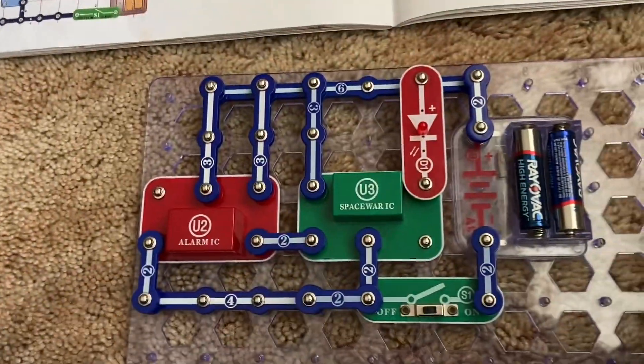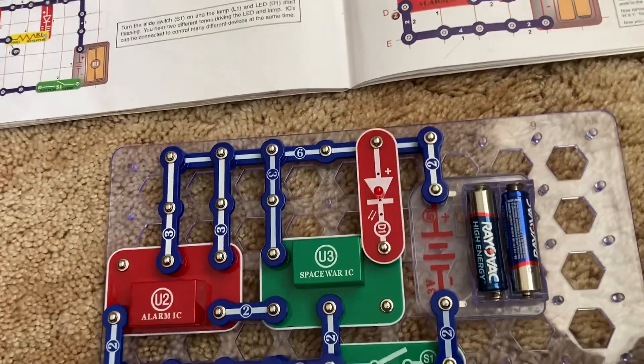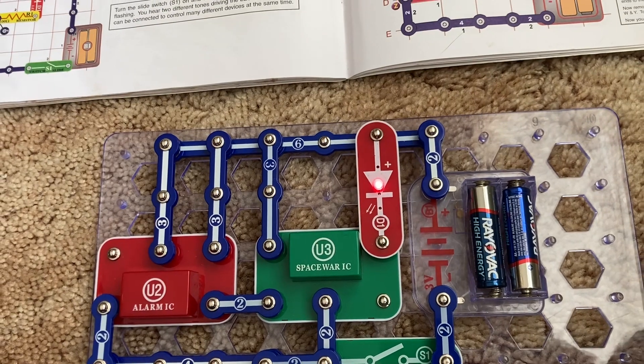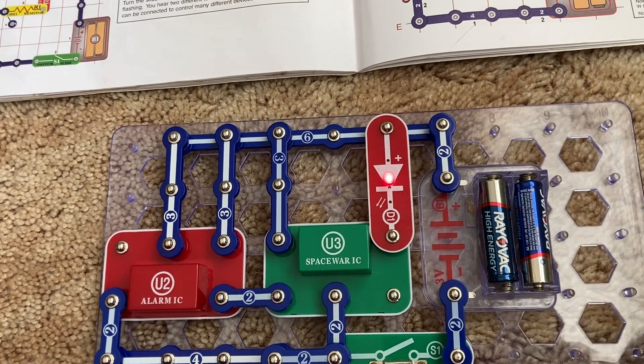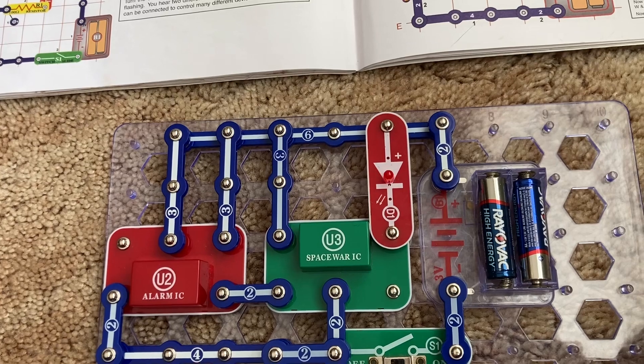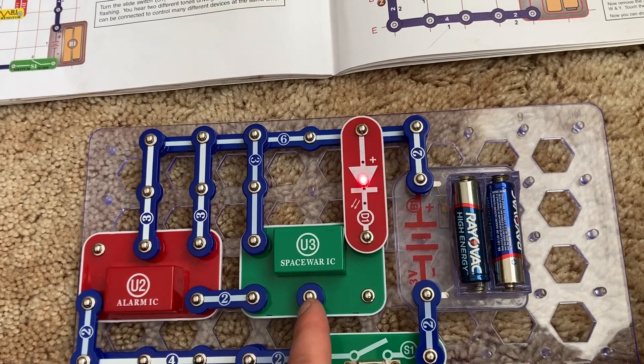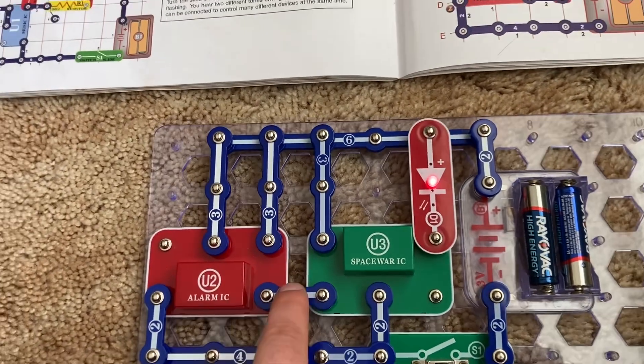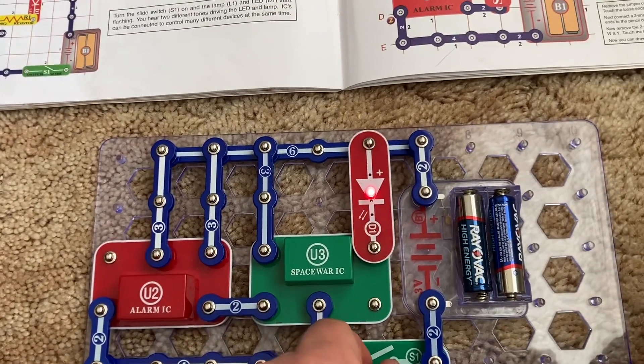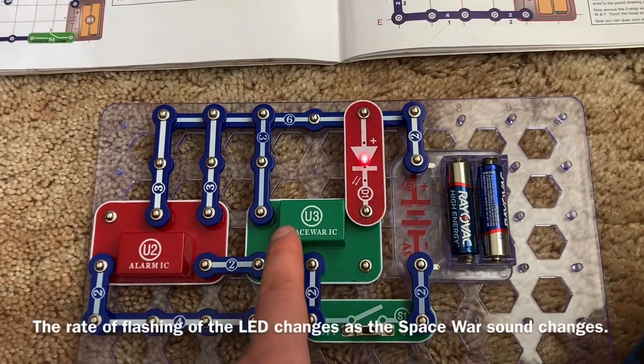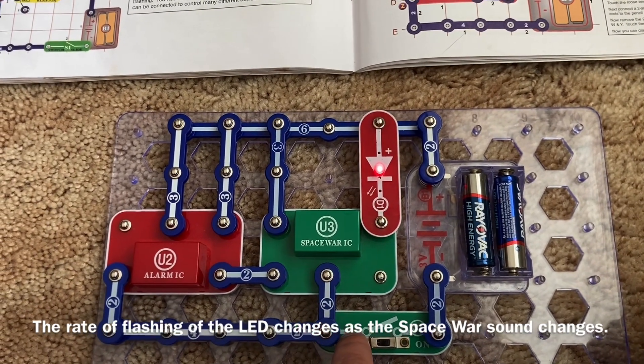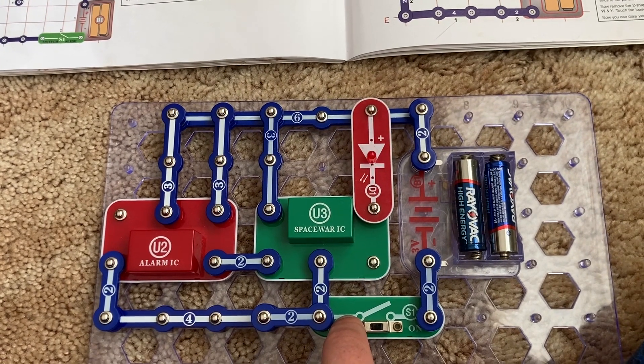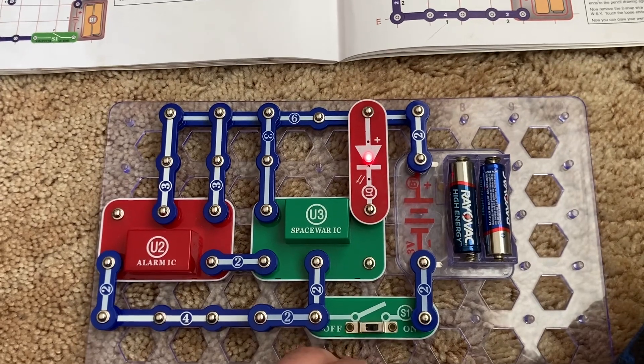Project 77 is Space War Flicker LED. When I turn on the slide switch, the red LED will blink and flash depending on the sound from the alarm integrated circuit and the Space War integrated circuit. I believe that the alarm integrated circuit is generating the machine gun sound. And then I believe the Space War sound changes when you turn the slide switch off and on again. You can do it repeatedly.